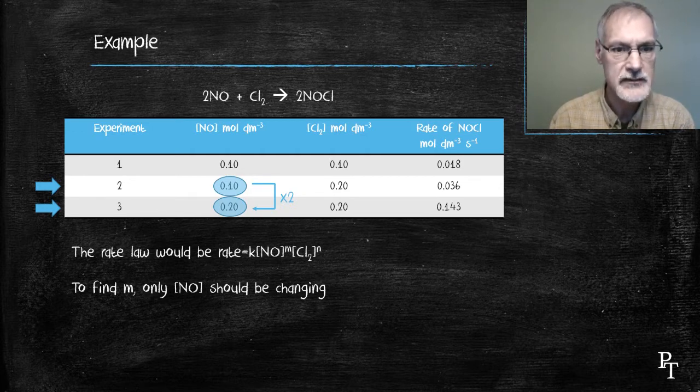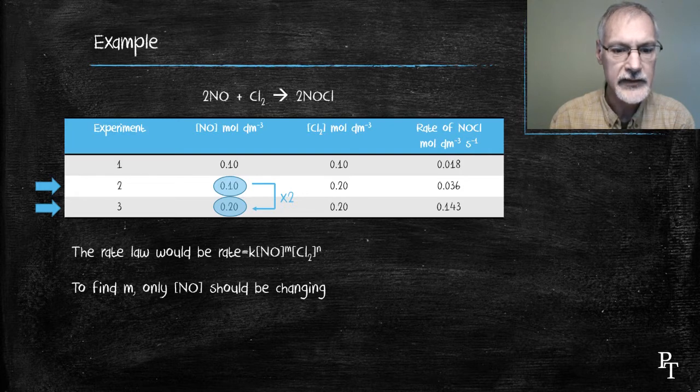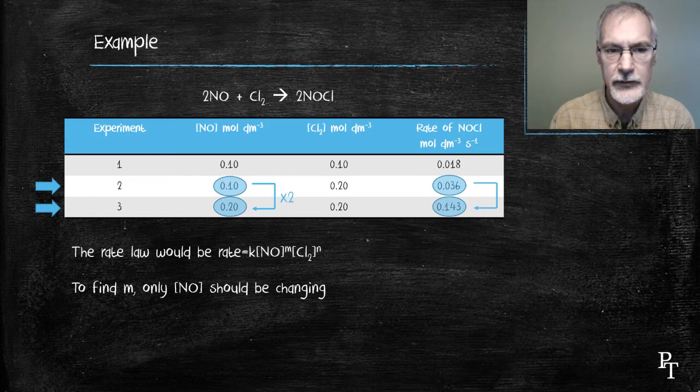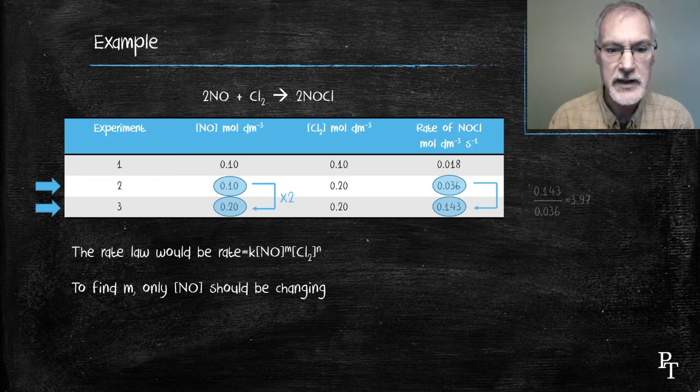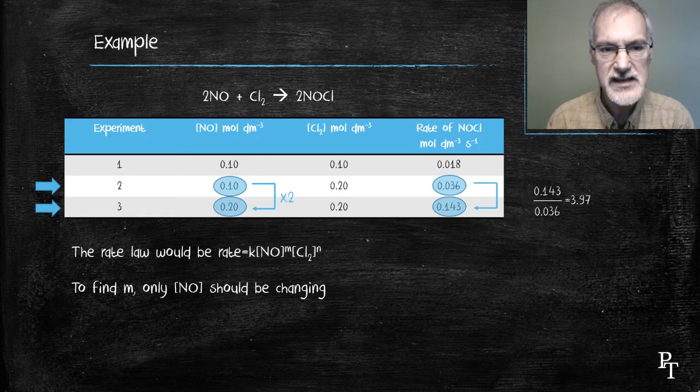Here I've doubled the concentration of nitrogen oxide. An examination of the rates of reaction indicates that they've also changed. So, I know that the exponent's not zero. Let's look at how they've changed. I'm going to take the latter, 0.143, and divide it by the former, 0.036. I notice that that's almost a four-fold change in the rate of a reaction.